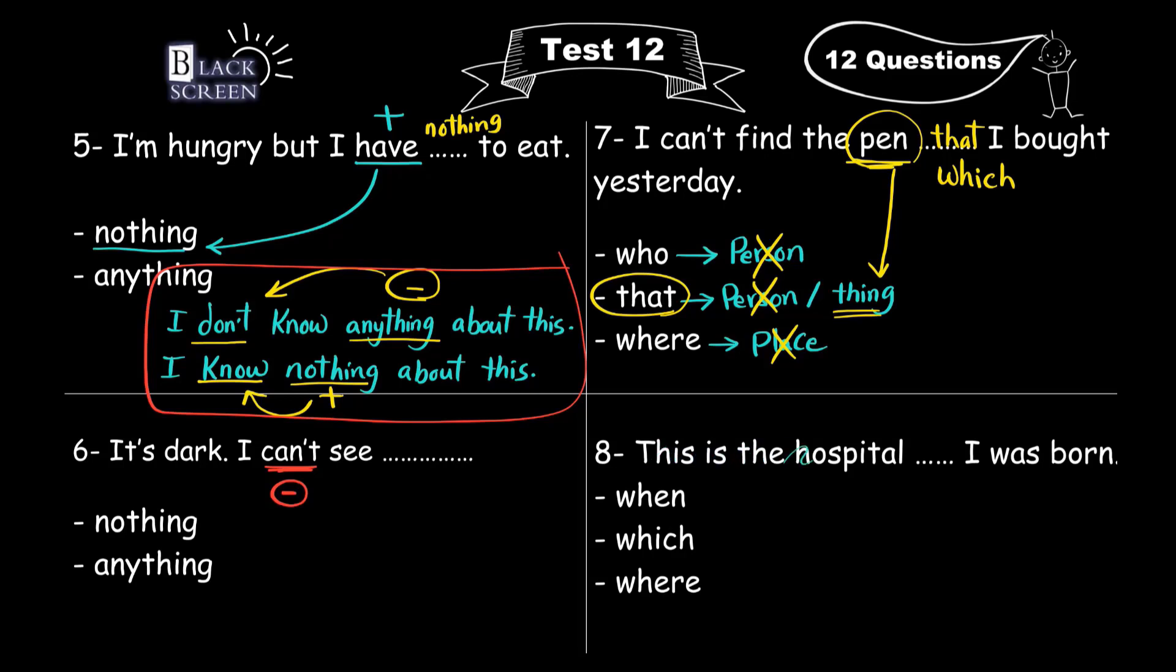This is the hospital, blank, I was born. When, which, where. We use when after time, which after a thing, where after a place. The hospital is a place, right? So we use where here. This is the hospital where I was born.